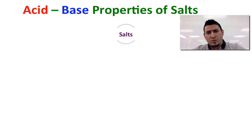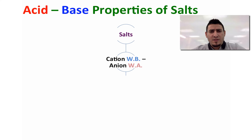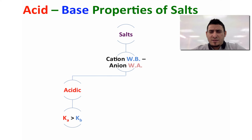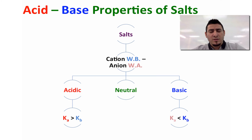The fourth type of salt is when it's made from the cation of a weak base and the anion of a weak acid. In this case, the salt will be acidic if the Ka of the acid is greater than the Kb of the base. It will be basic if the Kb of the base is greater than the Ka of the acid. And the salt will be neutral if Ka and Kb are equal.